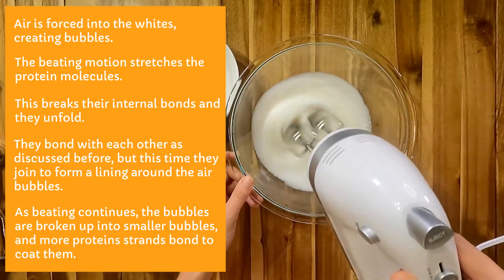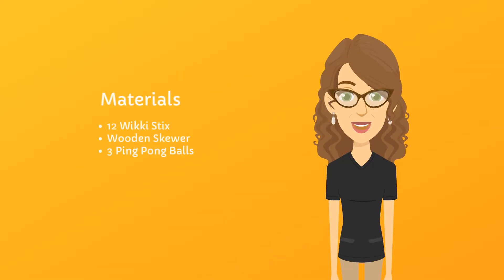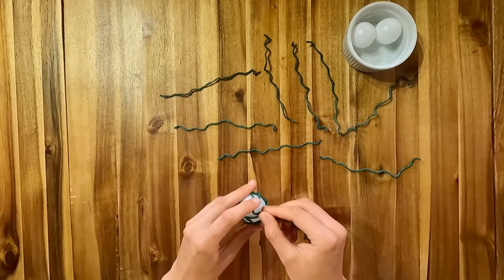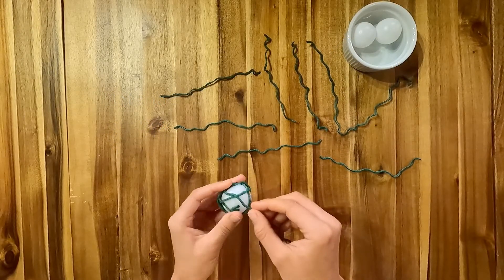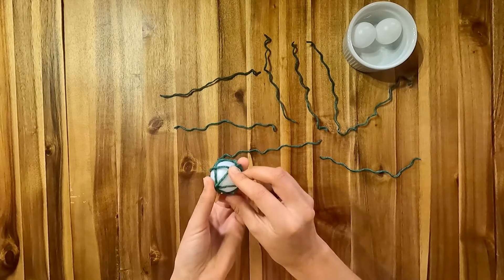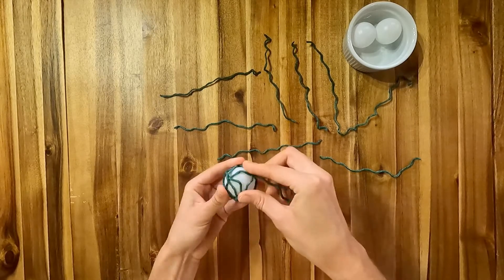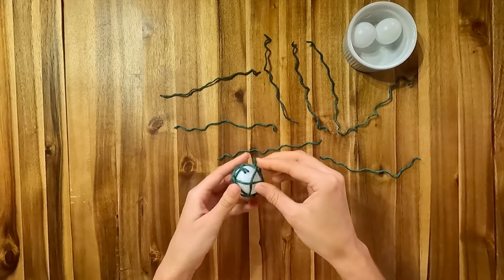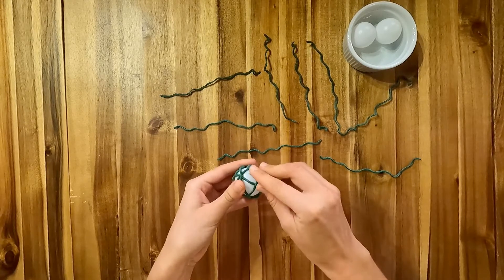Now let's model this transformation. You'll need 12 wiki sticks, a wooden skewer, and three ping-pong balls. Repeat the denaturation and coagulation modeling activity, but this time bond the wiki sticks around ping-pong balls to simulate the lining that forms around air bubbles in an egg white foam.